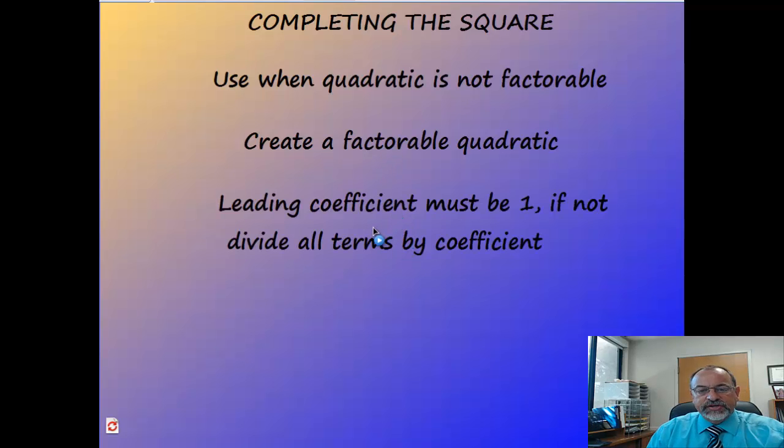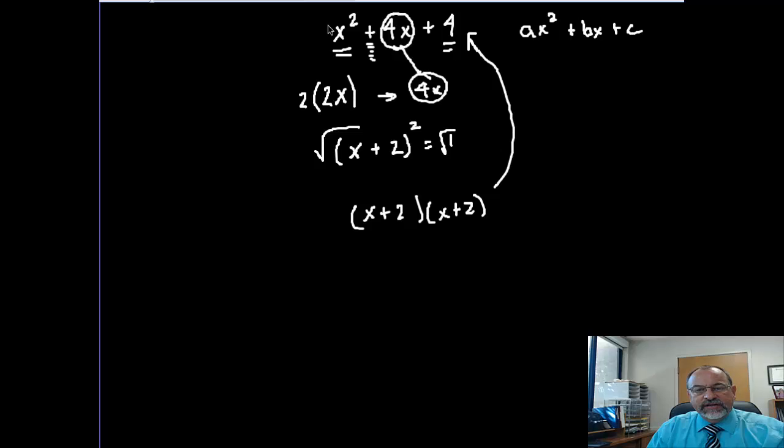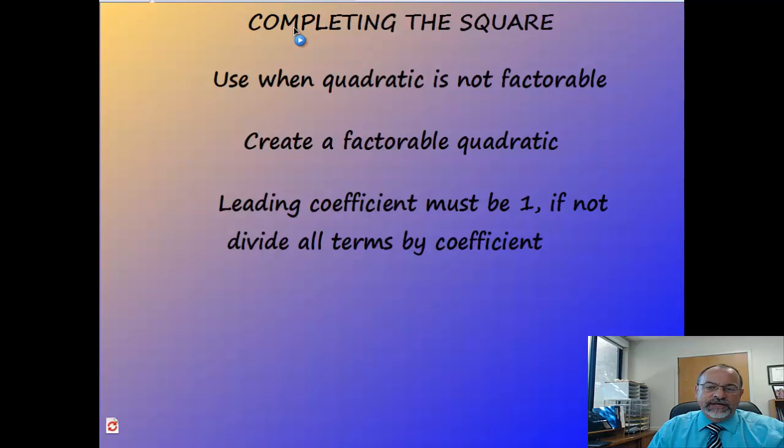The first thing you have to do is make sure that the leading coefficient is a 1. And if it's not, you're going to need to divide everything by that coefficient to make it a 1. In this case here, this was a 1, so if we needed to complete the square, we could go ahead and start from there. If it wasn't a 1, we would divide by that number, whatever it is, therefore making that a 1. And then we could go ahead and do the next thing.